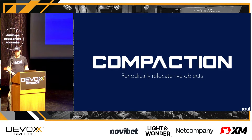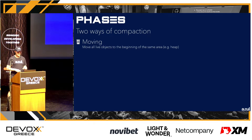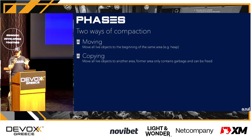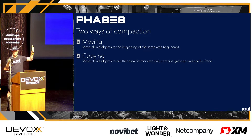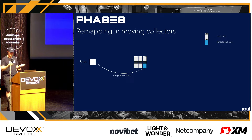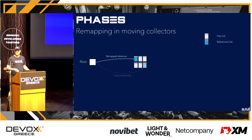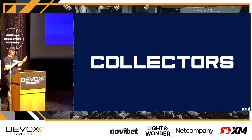Moving means we have one big heap and we move objects to one side and line them up neatly. Copying is similar, but there we have two memory areas — one fills up, and when it's full we move all the live objects to the other one, then free the first. One thing that comes with compaction is we have to update pointers — we have to remap them — which is an additional phase that takes time. The original reference must be updated after the object is moved.